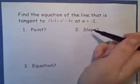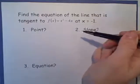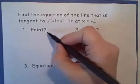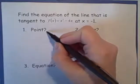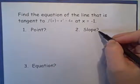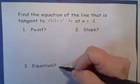I always take a three-step approach to finding the equation of a line. First, I make sure I know what point the line is supposed to go through. Second, I find the slope. And third, I come up with the equation.